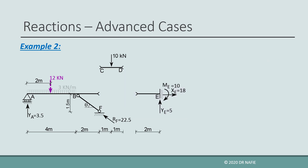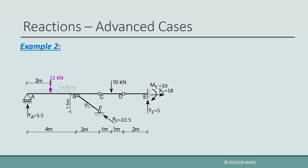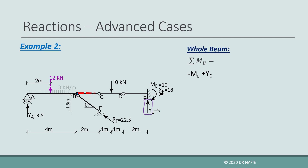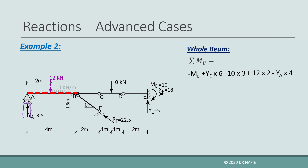Now that all the reactions have been evaluated, we can apply the equilibrium equations on the whole beam to validate the solution. Let us take the sum of moments about point B for the whole beam. We find that XE and RF both pass through point B and will not be included. The equation will include five terms: negative ME (clockwise), positive YE multiplied by 6 meters (counterclockwise), negative 10 kN force multiplied by 3 meters (clockwise), positive 12 kN equivalent force multiplied by 2 meters (counterclockwise), and negative YA multiplied by 4 meters (clockwise). By substituting the reactions into the equation, the equation evaluates to zero as expected, thus validating the results.